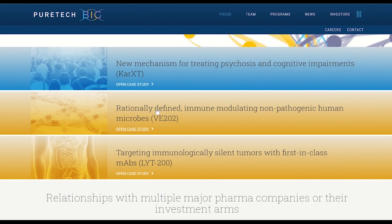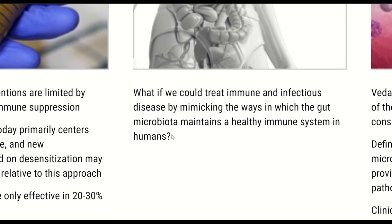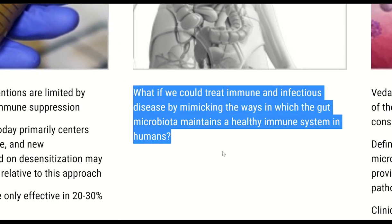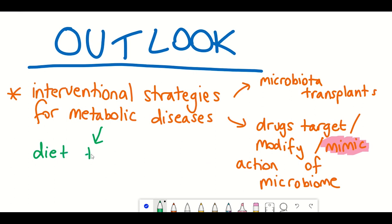And not just target the microbes, but also maybe to mimic what the microorganisms are doing. For example, they asked the question, what if we could treat immune and infectious disease by mimicking the ways in which the gut microbiota maintains a healthy immune system in humans? So that's super cool and super interesting. But before these drugs and transplants potentially come to fruition, there's something simpler that could be used, which is simply modification of the diet. And already there seems to be, at least in popular culture, or just happens to be the magazines and articles that I end up reading, definitely a focus on trying to eat foods that are good for your microbiome.